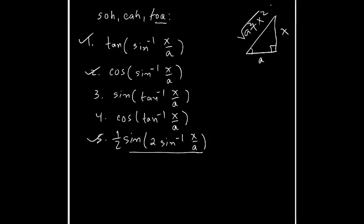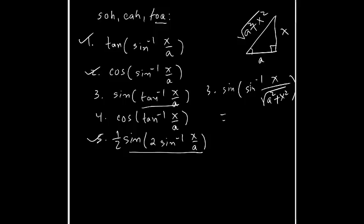With those two legs, the hypotenuse is √(a² + x²). For problem three, sine of tan inverse x over a — we convert to sine inverse of x over √(a² + x²). Then sine and sine inverse cancel out, giving x over √(a² + x²). That is problem three.